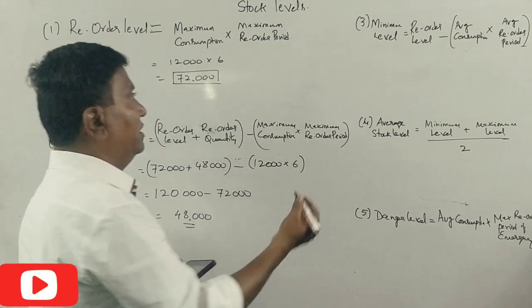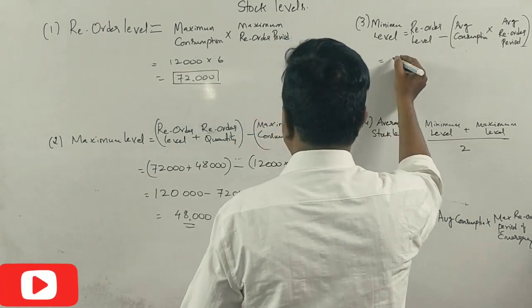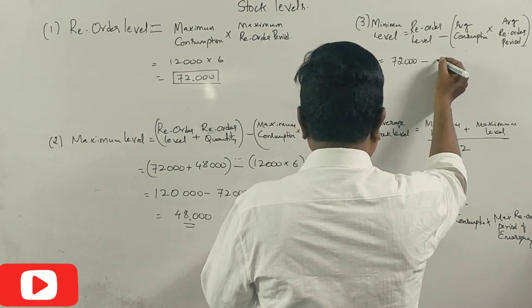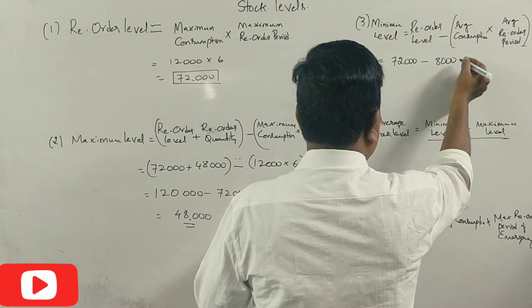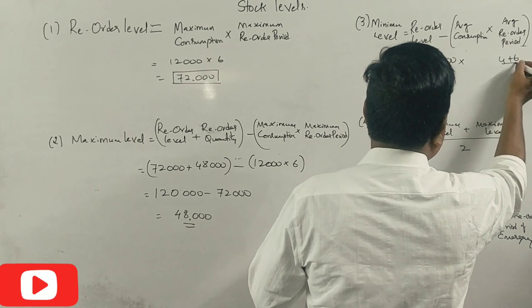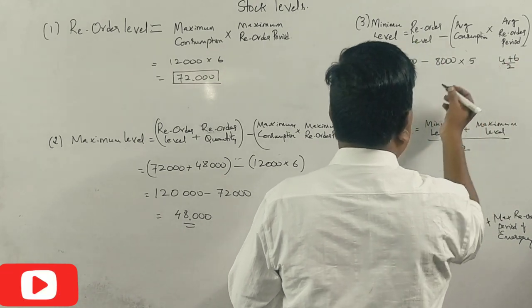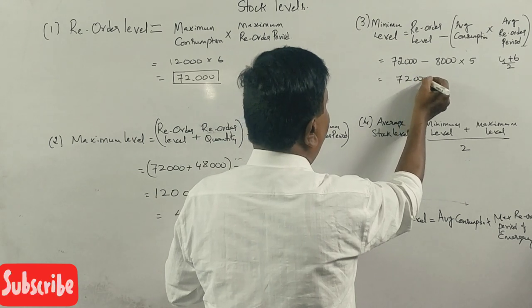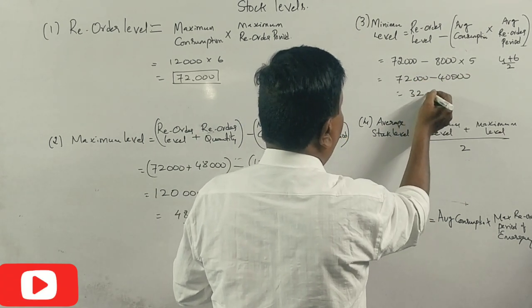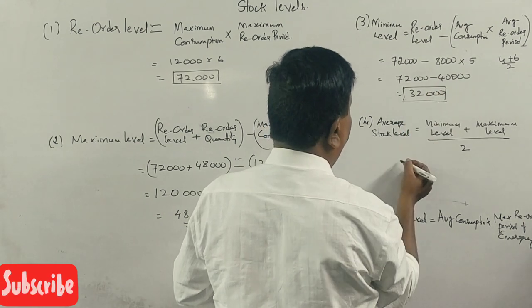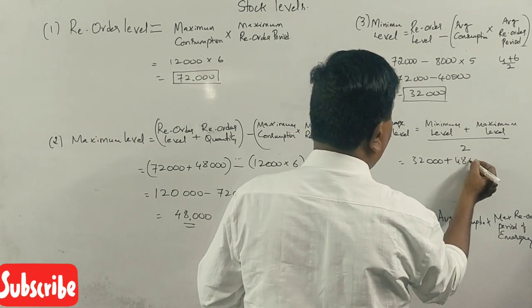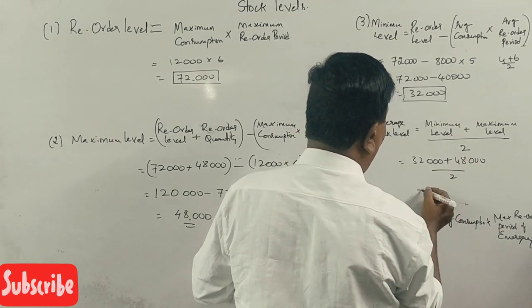48,000. For minimum level, 72,000 is the reorder level. Average stock level is 48,000 divided by 240,000.